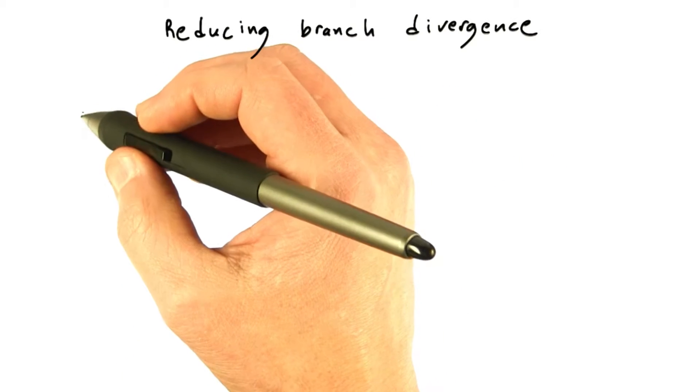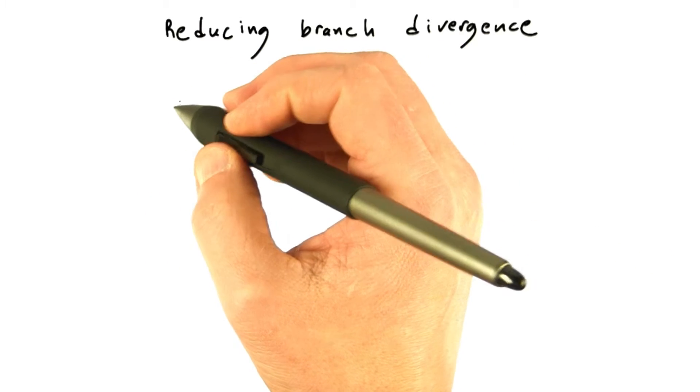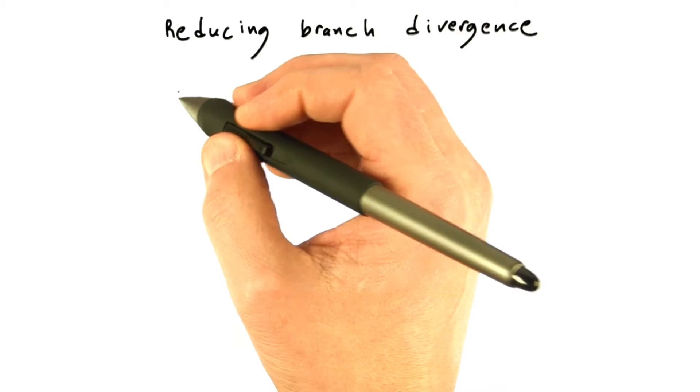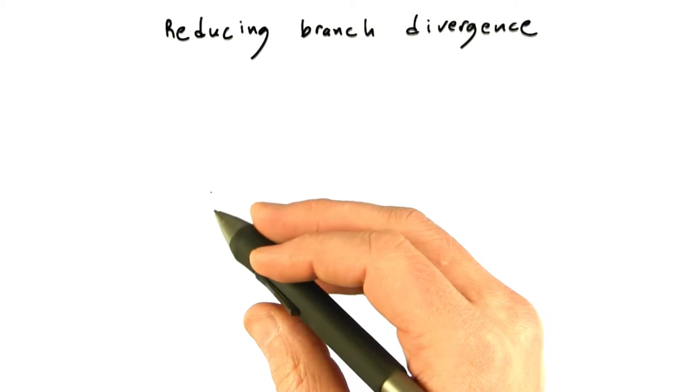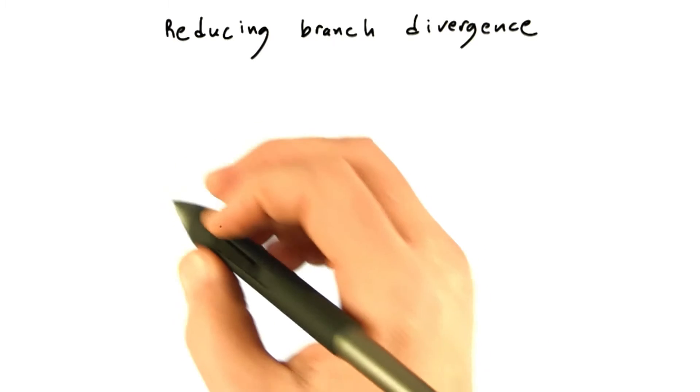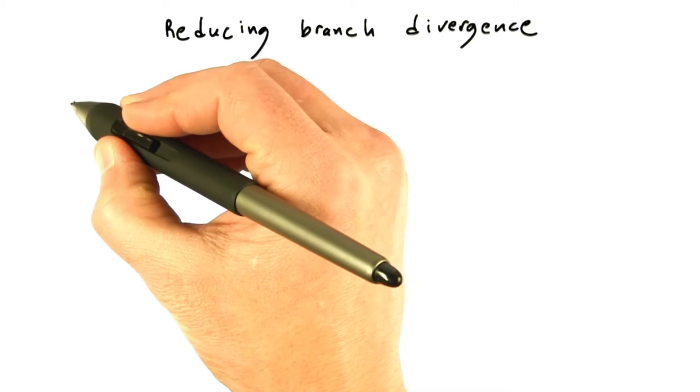There's no real recipe for reducing branch divergence. What to do depends on the algorithm, and sometimes the right answer is an entirely new algorithm. There are a couple of general principles, though.